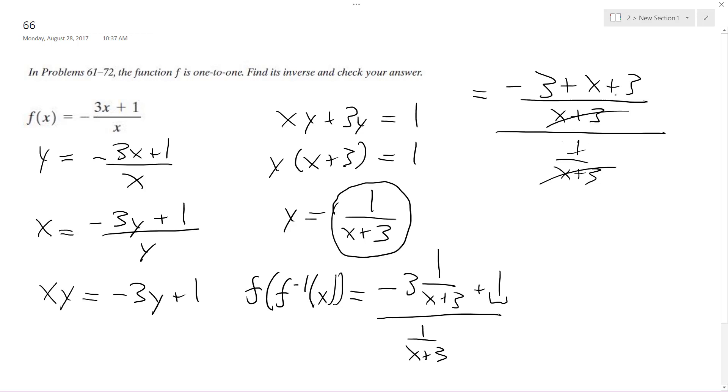These cancel out, this just becomes a 1, these 3s cancel out, and you're just left with x. So that proves it. So the inverse of f of x is equal to 1 over x plus 3.